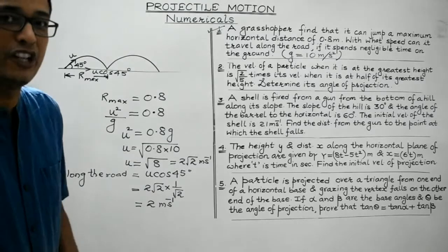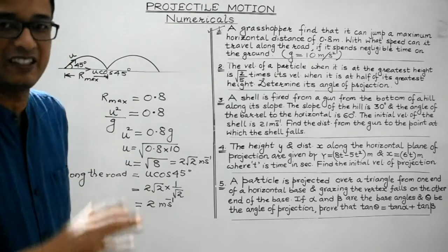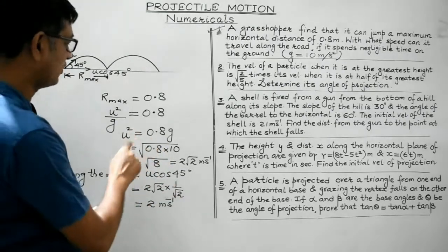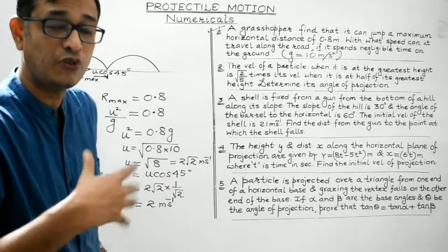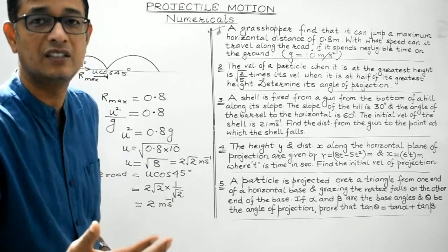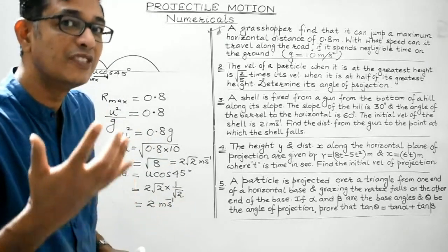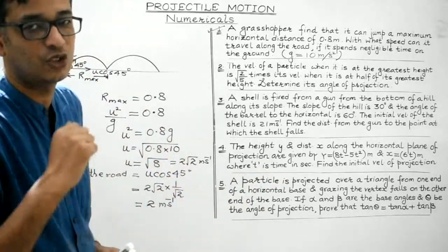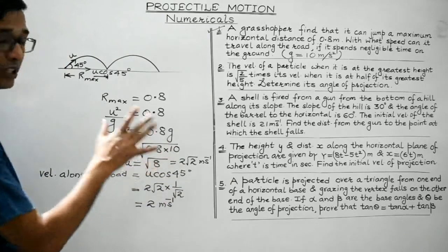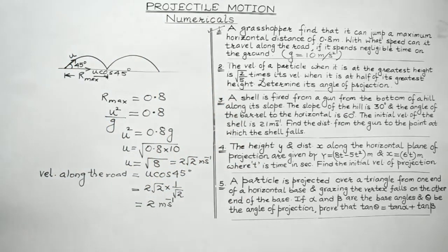So maximum range is given, meaning the angle of projection must be 45 degrees. Secondly, after obtaining the value of u, don't stop — we need to find the velocity along the road, which is u cos θ, obtained to be 2 meters per second. Let's discuss the second question.